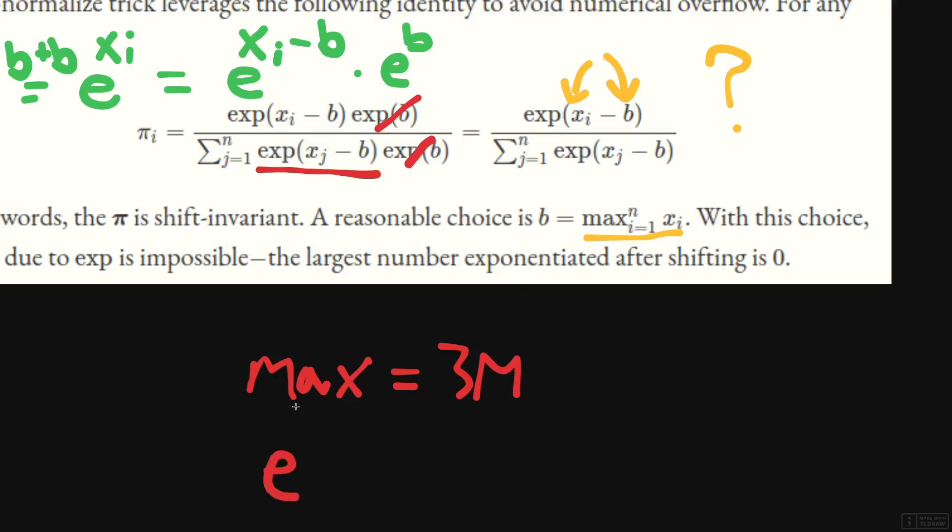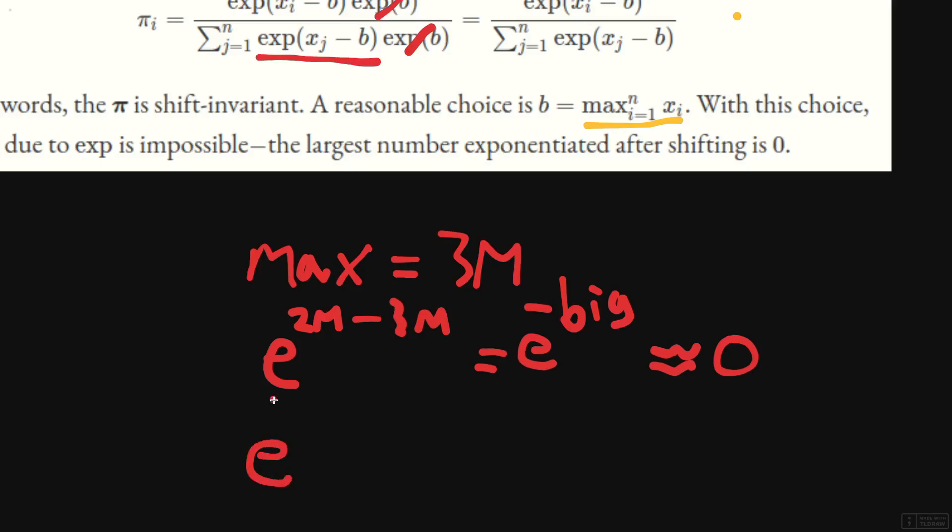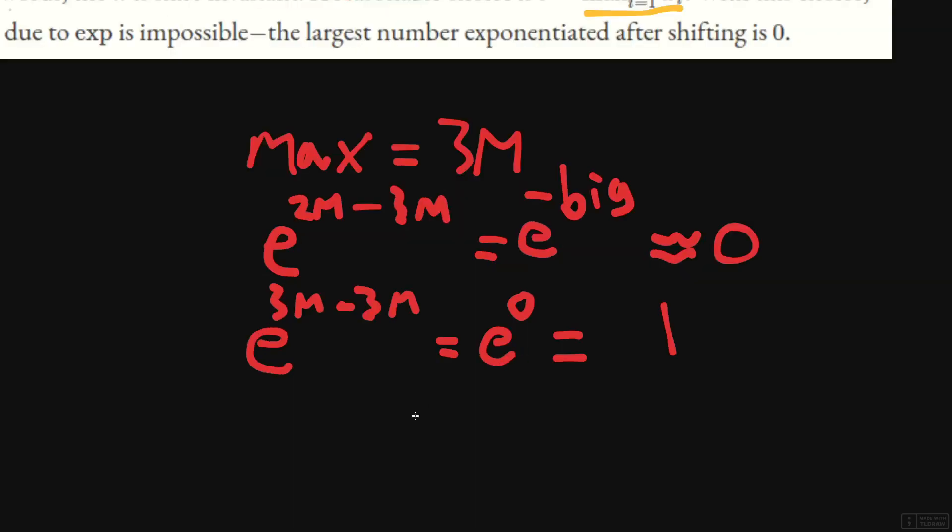Let's take a ridiculous example. Let's say the max is equal to 3 million. You do e to the 3 million - no way any computer can do that. So what happens with our new formula now is that we're going to do e to the whatever the number is, which is going to be smaller than 3 million. Let's say it's 2 million minus 3 million, and you're going to get a big negative number. And e to the minus something will be very close to zero. And at the extreme when you have e to the 3 million minus 3 million, you're going to get e to the 0, which is equal to 1.